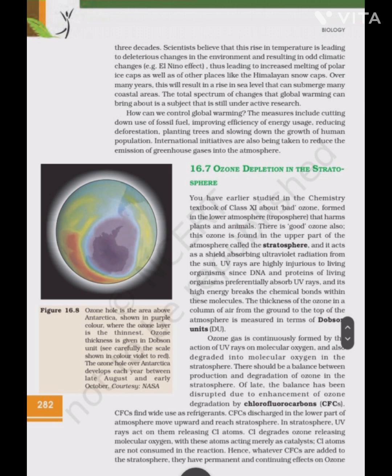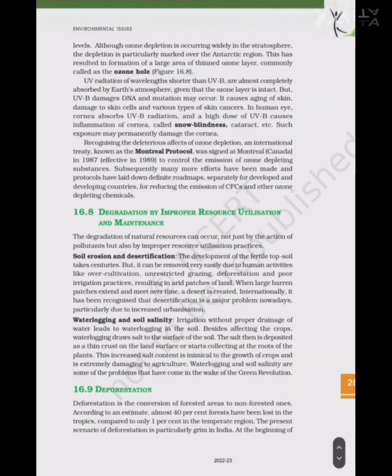UV radiation of wavelengths shorter than UVB is almost completely absorbed by the Earth's atmosphere when the ozone layer is intact. But UVB damages DNA and mutations may occur. It causes aging of skin, damage to skin cells and various types of skin cancers. In the human eye, the cornea absorbs UVB radiation, and a high dose of UVB causes inflammation of the cornea, called snow blindness, cataracts, etc., and may permanently damage the cornea. An international treaty known as the Montreal Protocol was signed at Montreal, Canada, in 1987 and was effective from 1989 to control the emission of ozone-depleting substances. Subsequently, many protocols have laid down definite roadmaps for developed and developing countries for reducing emission of CFCs and other ozone-depleting chemicals.